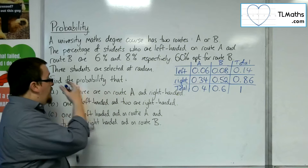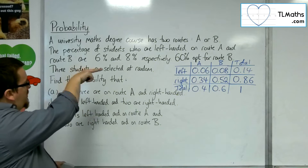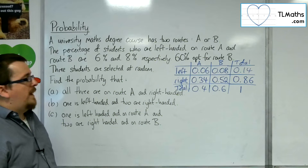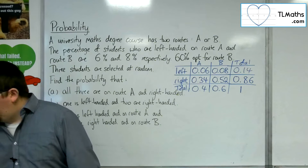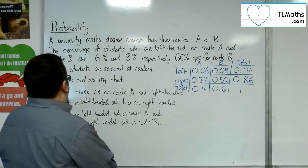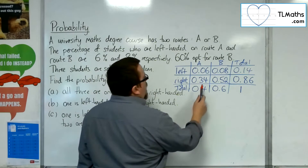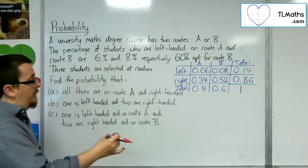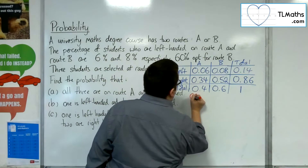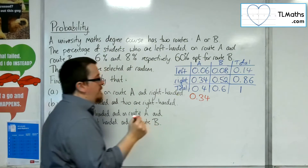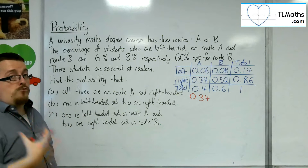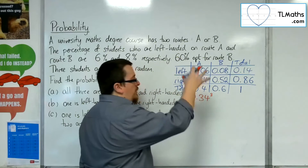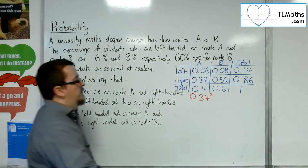Three students are selected at random. Find the probability that all three are on route A and right-handed. If all three are on route A and right-handed, we use 0.34 — that's the probability of one person being selected. Because this happens three times, it must be 0.34 cubed: 0.34 times 0.34 times 0.34.